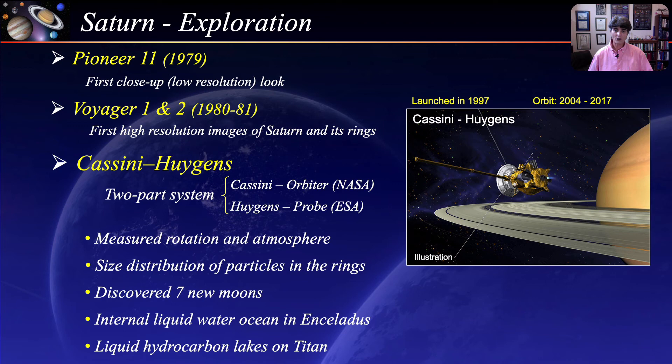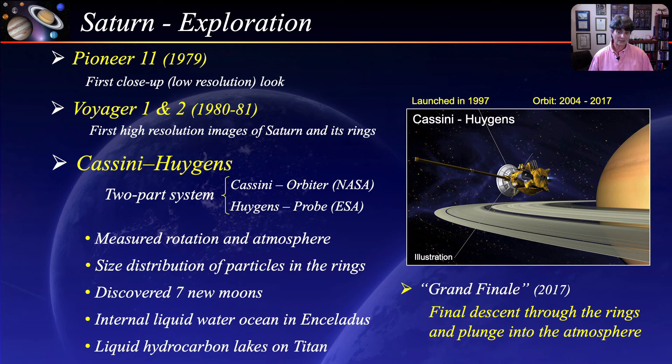The discovery of lakes on Titan is the first discovery of current lakes anywhere in the solar system besides Earth. In 2017, Cassini ended its mission in a grand finale descent, flying through Saturn's rings and plunging into Saturn's atmosphere. Although Cassini's mission has ended, the analysis of return data from its grand finale descent will continue for many years.